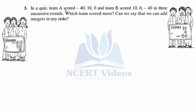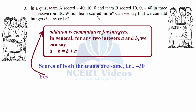Question 3: In a quiz, Team A scored minus 40, 10, and 0; Team B scored 10, 0, and minus 40 in three successive rounds. Which team scored more? Adding Team A: minus 40 plus 10 — signs are different, so we subtract, and 0 doesn't affect the total — giving minus 30. For Team B the scores are the same values, so minus 30 again. Both teams scored the same.